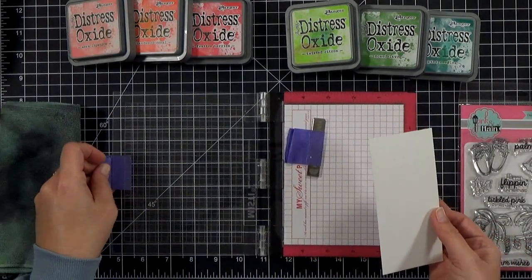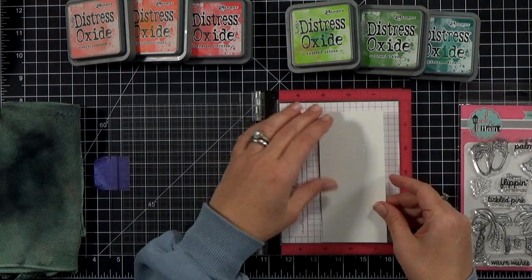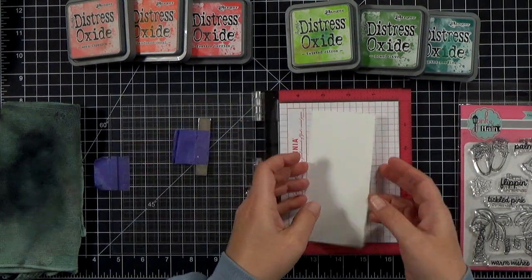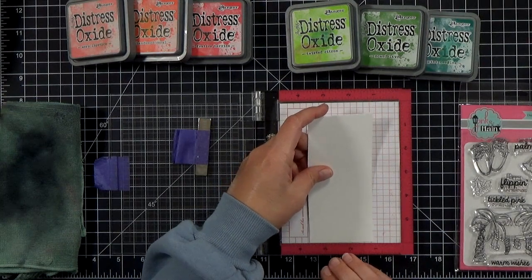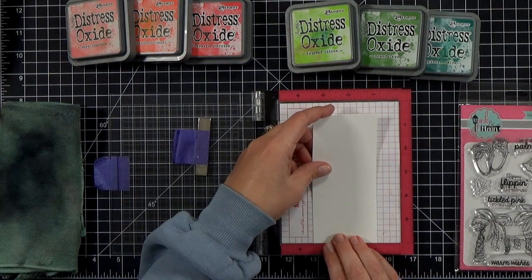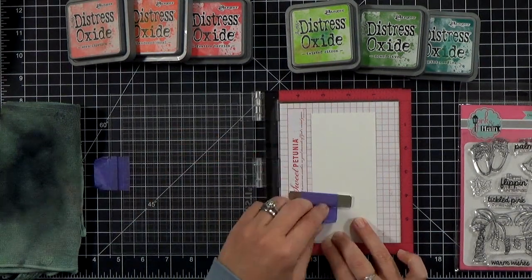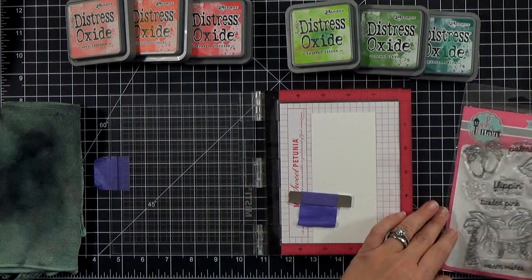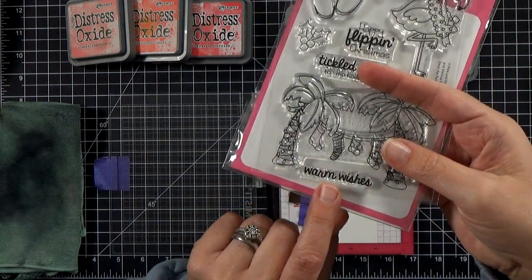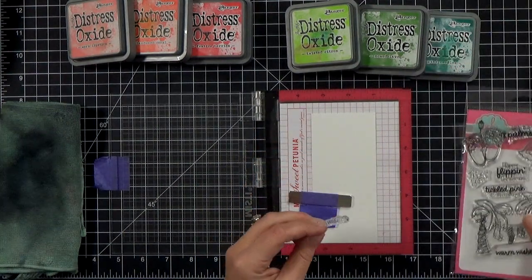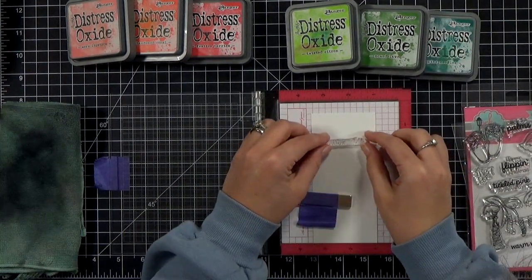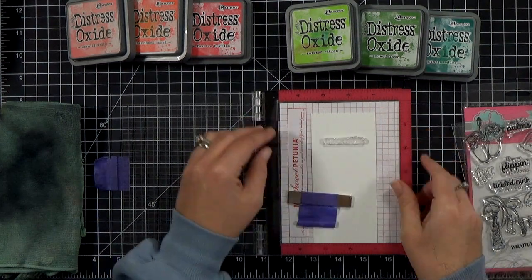So the first thing that I'm going to do is make my patterned paper. If you have a pre-printed piece of patterned paper that works for the same colors that you're looking for, by all means go ahead and use that. This took me about 10 minutes, so if you have pre-printed patterned paper that will save you a few minutes. What I did was I just grabbed the Warm Wishes stamp and I lined it up in my MISTI. I wanted to make sure that it was straight across.